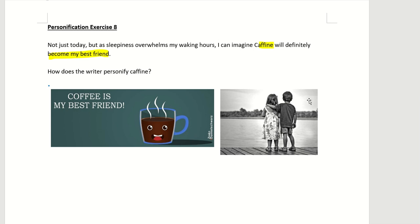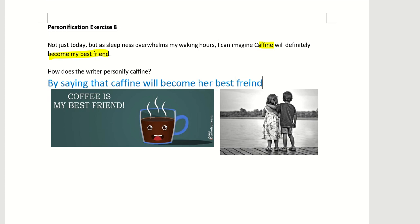This is the explanation for the exercise on personification. How does the writer find caffeine? You need to explain the personification phrase first. By saying that caffeine will become her best friend — that is the personification here. What did the writer do for this personification?